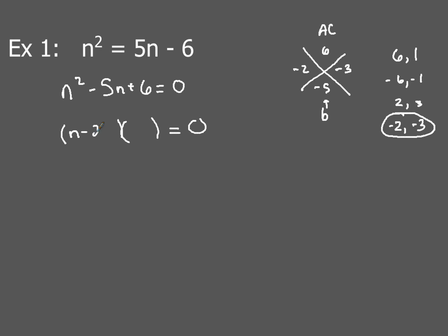So we'll have the n - 2 first, and then n - 3 second. And of course you want to make sure that you have that equal 0 piece in there.